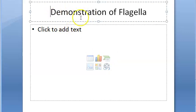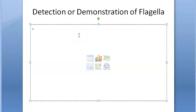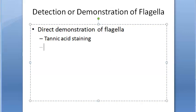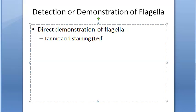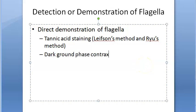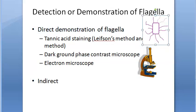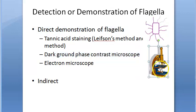Next, detection or demonstration of flagella. How will you demonstrate flagella and show that a bacterium is motile? If you are in a microbiology lab with one motile and one non-motile bacterium, you can use direct demonstration methods: tannic acid staining - called Leifson's method or Ryu's method - dark ground or phase contrast microscopy, or electron microscopy.